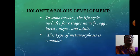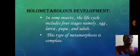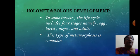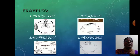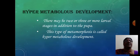In holometabolous development, the life cycle includes all four stages: egg, larva, pupa, and adult. This type of metamorphosis is the complete one, and some examples are given for this type.